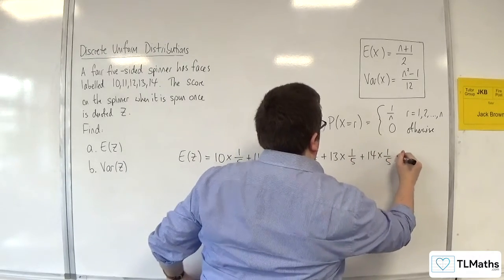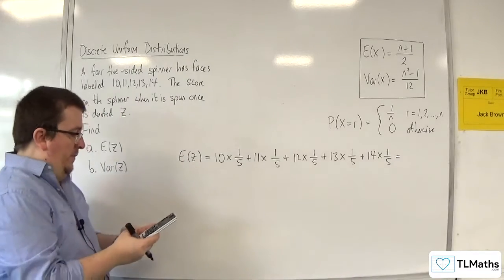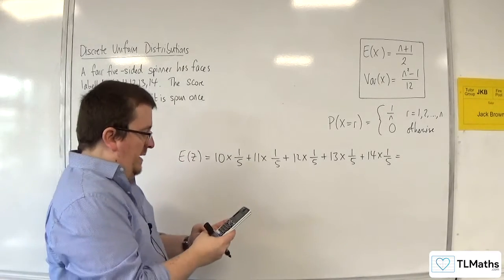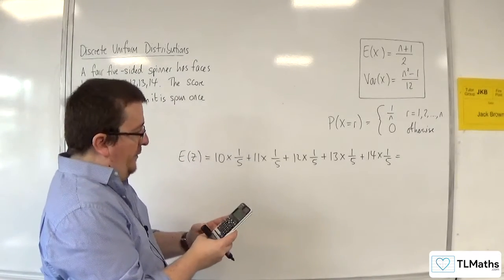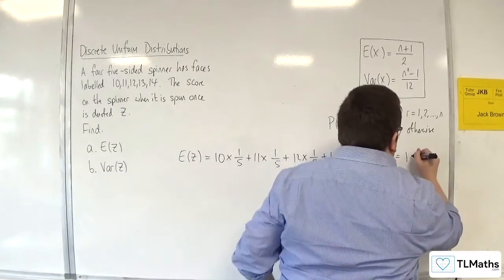So we've got 10 over 5 plus 11 over 5 plus 12 over 5 plus 13 over 5 plus 14 over 5, and surprisingly we get 12.